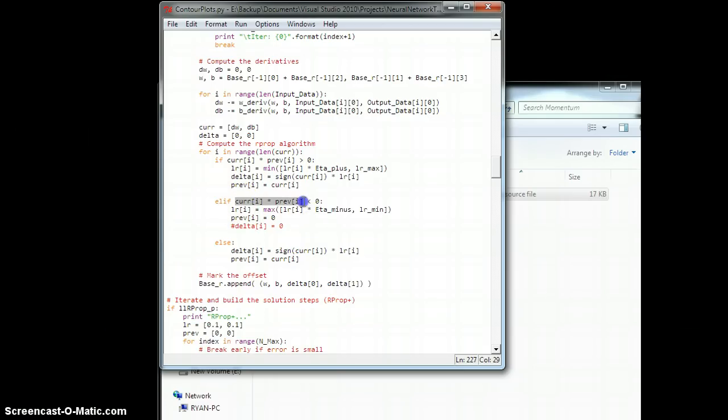If it flips sign, if this product is negative, the learning rate gets multiplied by eta minus, which is 0.5, scales it down. My previous step I set to be 0. That stops me from moving in that direction. And then I just look to see what happens next time. Next time, this product current times previous will be 0. You end up in this case. I look at the sign. This learning rate has already been shrunk the previous iteration and I move in that direction. Very straightforward.